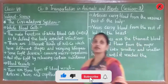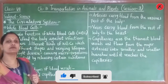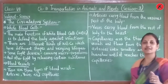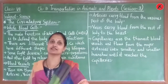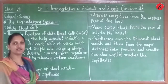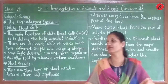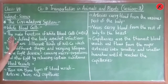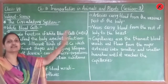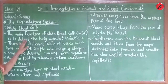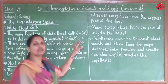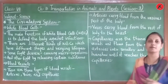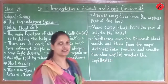Now the circulatory system is made up of three main components: blood, blood vessels, and heart. In the last session we discussed about plasma, platelets, and RBC. Today we will continue with white blood cells, that is WBC. The main function of WBC is to defend the body against infection. WBC हमारे body को infection से fight करने में मदद करता है।